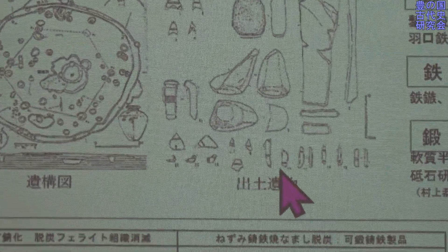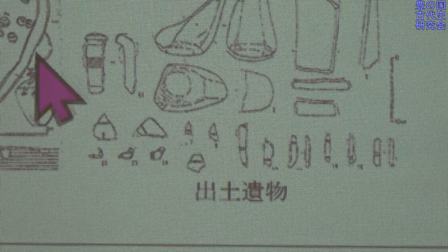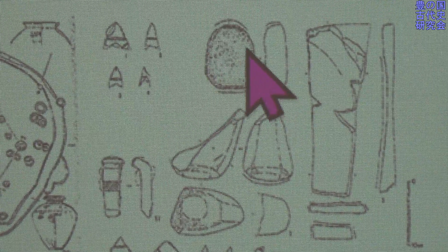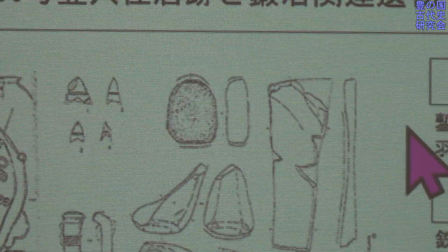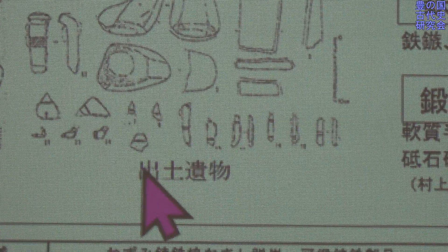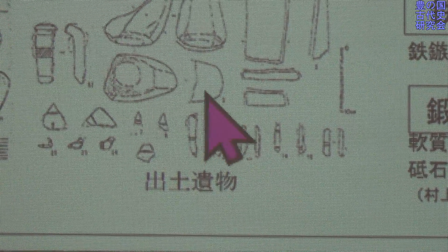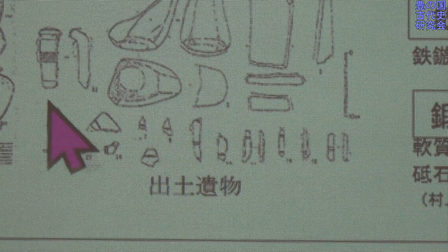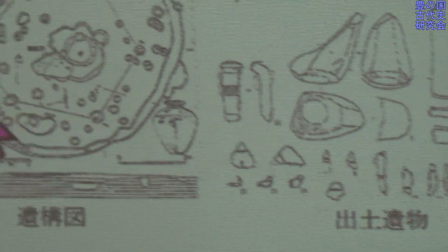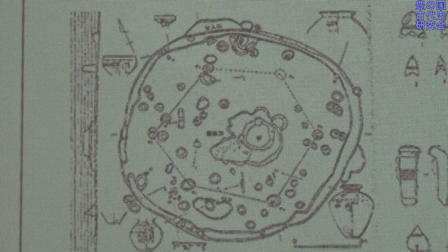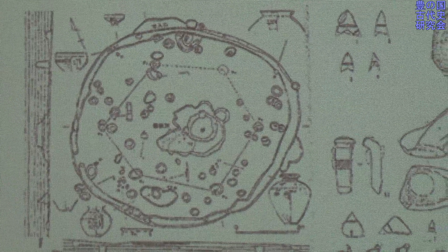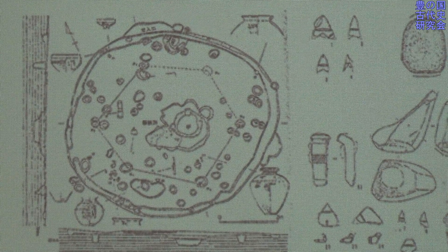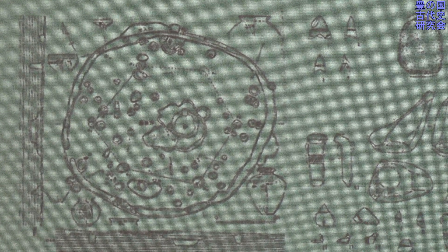弥生時代の遺跡の鍛冶工房の実績を示しておりまして、出てくるものは鍛冶工具としてはタガネが出ますね。それから石杵・砥石があります。下の方には切片、タガネで切り刻んだ切れ端しか残っておりません。こういった作業をするのは原始的・進展的な鍛冶しかできないということを表しております。